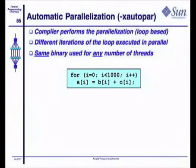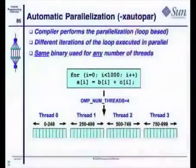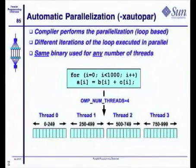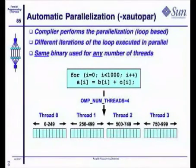And the compiler will find this parallelism. By the way, the number thousand can be an arbitrary program variable. It doesn't have to be a hard-coded number. Once I have the parallel binary, I set this environment variable, OMP_NUM_THREADS, to 4, for example. And if that loop is a thousand long at runtime, each thread will work on 250 iterations. And we get our parallelism executed at runtime.